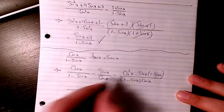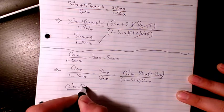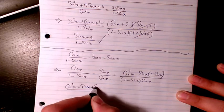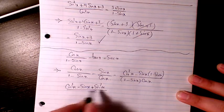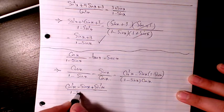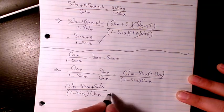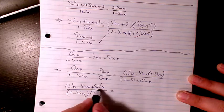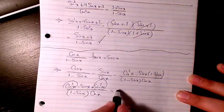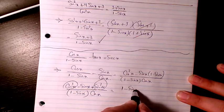So I have cosine squared x minus sine x plus sine squared x, all divided by 1 minus sine x times cosine x. Here, sine squared x plus cosine squared x equals 1, so the numerator becomes 1 minus sine x.